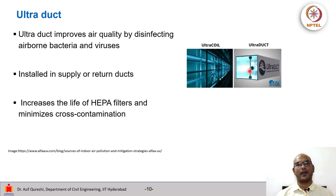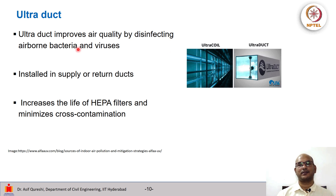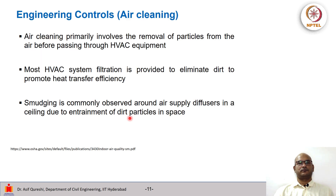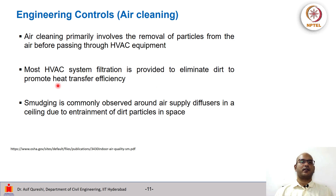Things such as UV ducts are being proposed. They improve air quality by disinfecting airborne bacteria and viruses and can be installed in the supply duct or the return duct. This increases the life of HEPA filters and also minimizes cross contamination. Some engineering controls also include air cleaning, which involves removal of particles from the air before passing through the HVAC equipment. For most such systems, filtration is provided to eliminate dirt and promote heat transfer efficiency. It is commonly observed that there is smudging around air supply diffusers in a ceiling due to entrainment of dirt particles in space.